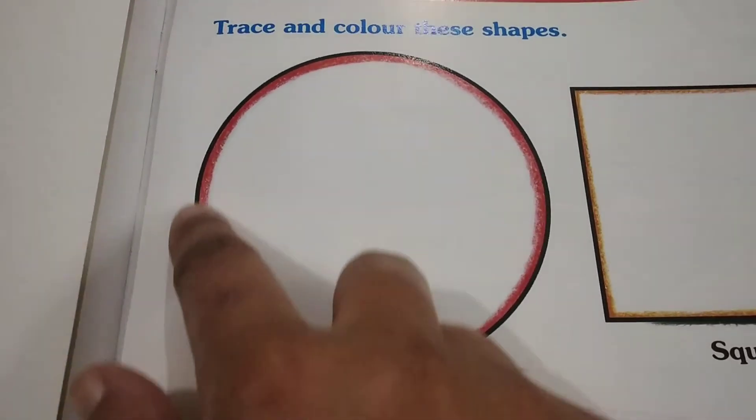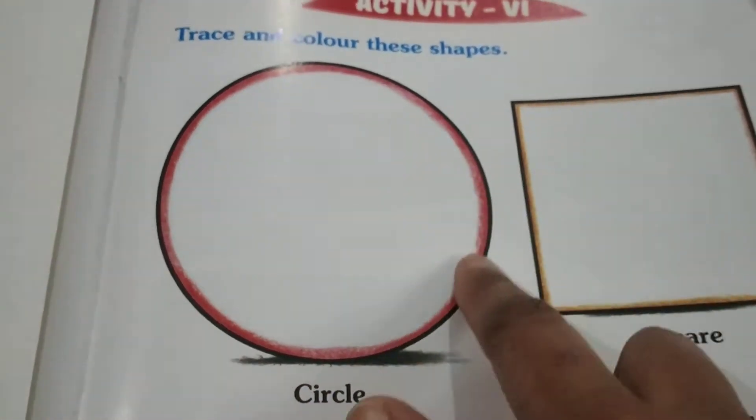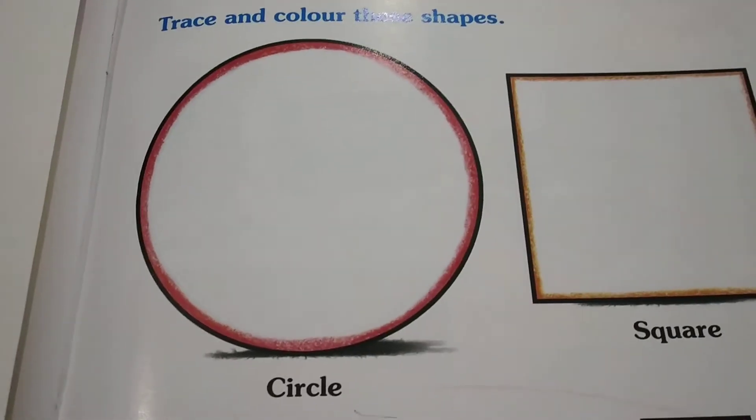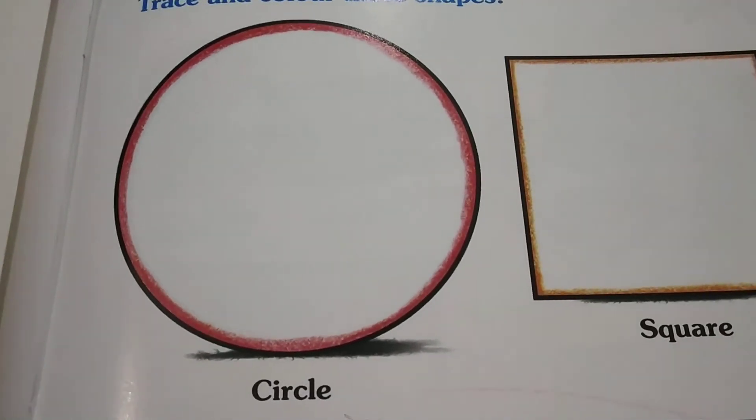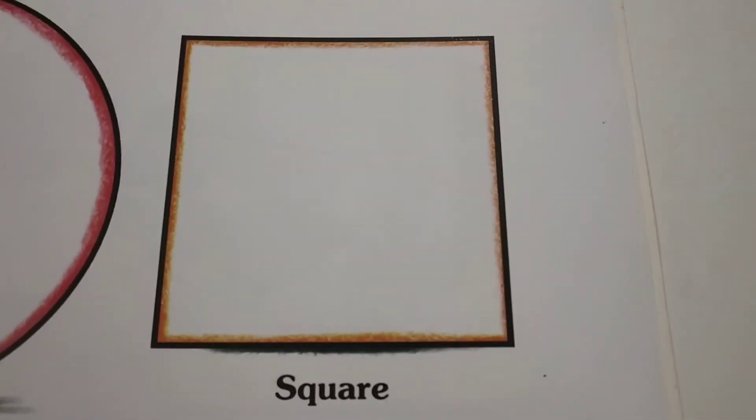A plate is a circle. Now the next is square. This is a square. Repeat after me: square, square. This is a square.